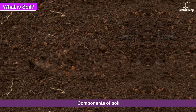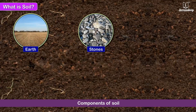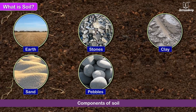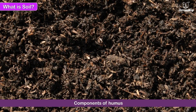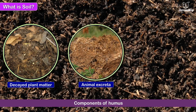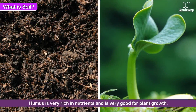Soil is a mixture of fine particles of earth, stones, clay, sand, pebbles and humus. Humus consists of particles of decayed plant matter, animal excreta, as well as dead and decayed animal bodies. It is very rich in nutrients and is very good for plant growth.